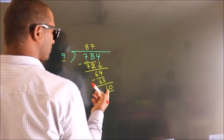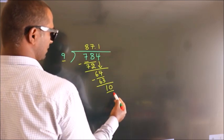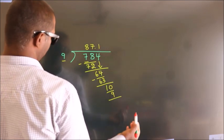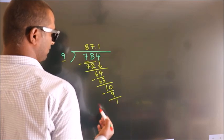A number close to 10 in 9 table is 9, 1, 9. Now, we subtract, we get 1.